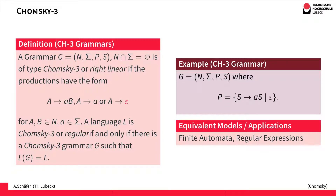These types of production actually look very similar to the transitions in finite automata, and indeed finite automata are the equivalent machine model. Also equivalent to Chomsky three grammars are the regular expressions, and these are the most used models for handling Chomsky three languages. We would usually use finite automata or regular expressions — for example, in programming languages you would use regular expressions to define a Chomsky three language instead of a Chomsky three grammar.